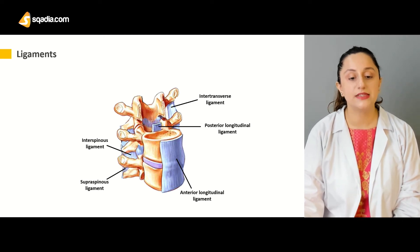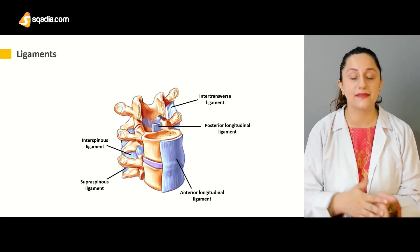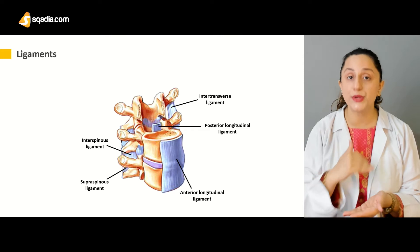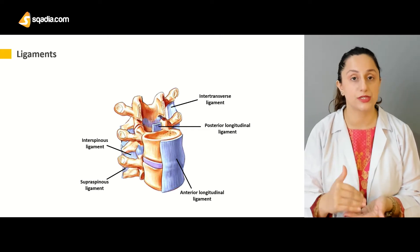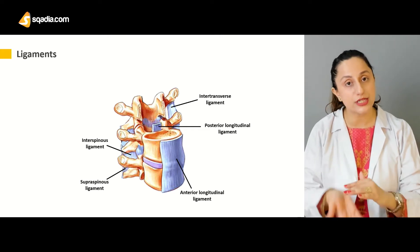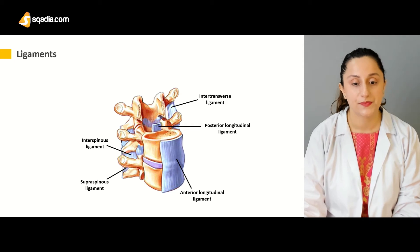And then we have the supraspinous ligaments. They are attached superiorly to the spines of the vertebra — to the corresponding vertebra. They are being attached over there.